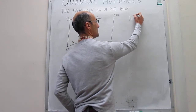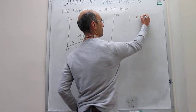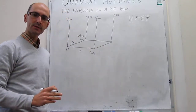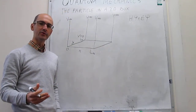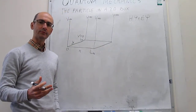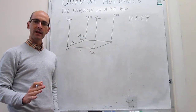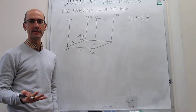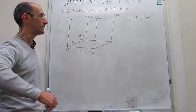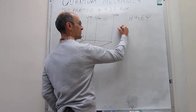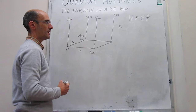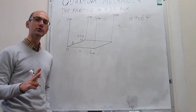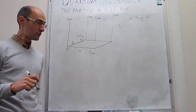Setting up the Schrödinger equation, we have this. The Hamiltonian operator, as always, has two terms: the kinetic energy term and the potential energy term. The potential energy term is 0, so we won't have to worry about this. The question is, well, what is the kinetic energy term? The kinetic energy term has kind of the same form as what we have seen for the particle in a 1D box, but you have to consider motion along two dimensions.